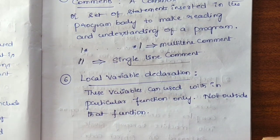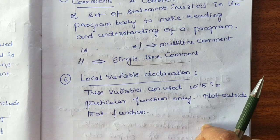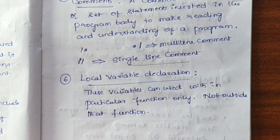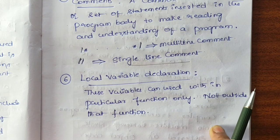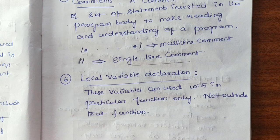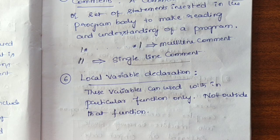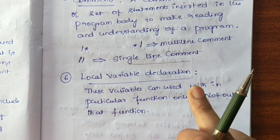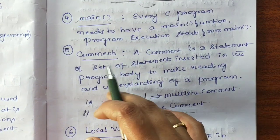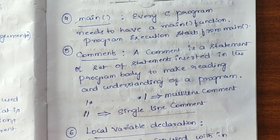Next is local variable declaration. Local variable declaration means in any function, within that function, if we declare some variable, that is called a local variable. That variable has scope only within that function — outside that function we cannot use a local variable. Suppose inside main if I declare some variable, I can use that variable only inside the main function; in other parts of the program I cannot use it. One more thing about comments: they are not going to be considered by the compiler for execution — they are just for human readability.